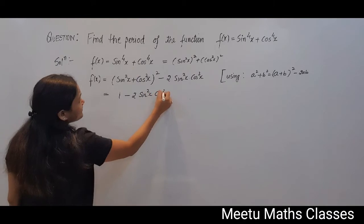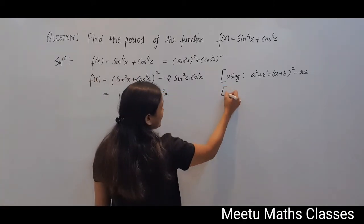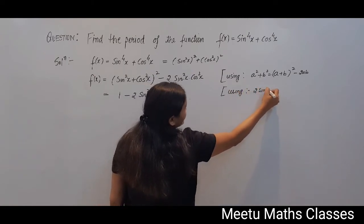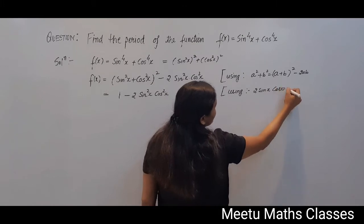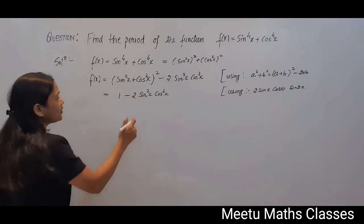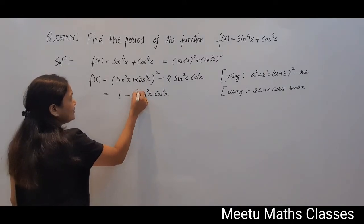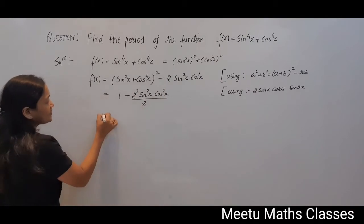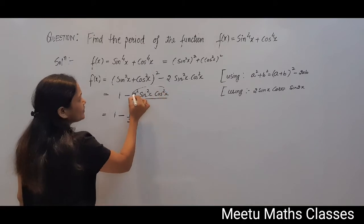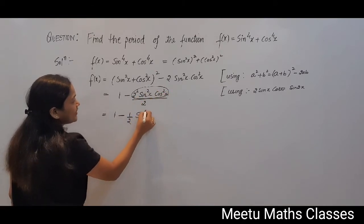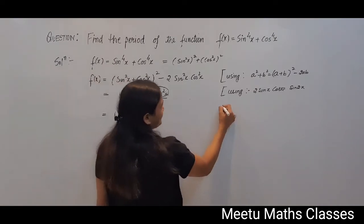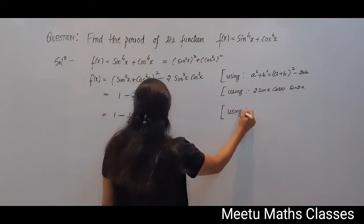This equals 1 - 2sin²x·cos²x. Now using the formula 2sinx·cosx = sin2x, we multiply and divide by 2, so it becomes 1 - (1/2)sin²2x.